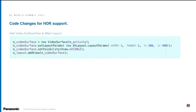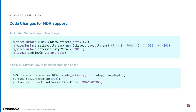We have some code snippets for adding an HDR SurfaceView to the Qt main layout, and for making the Android SurfaceView transparent and on top. This is done in the Qt activity delegate class.